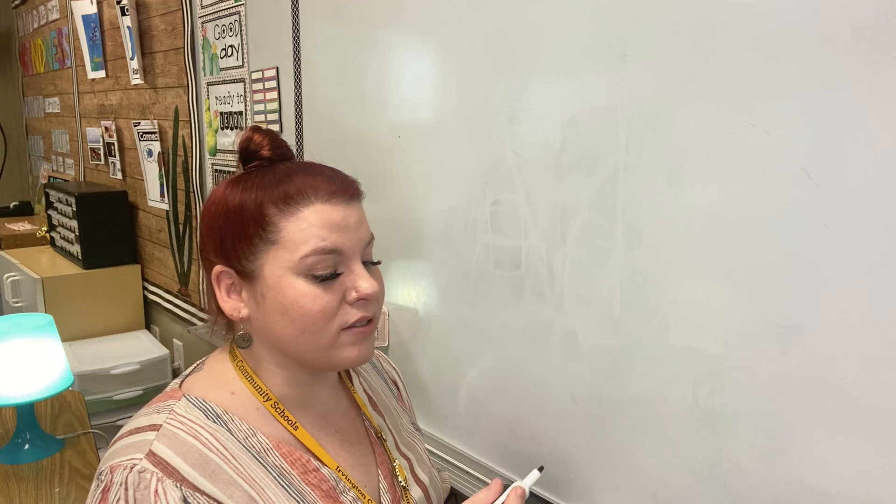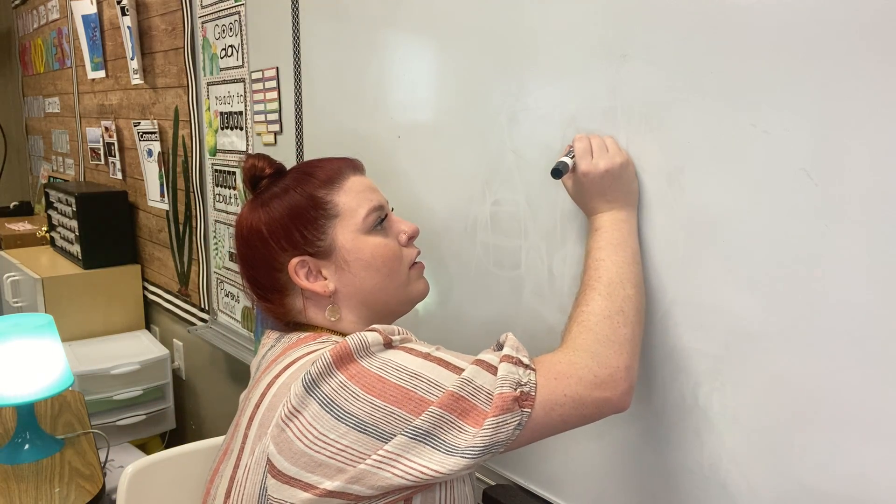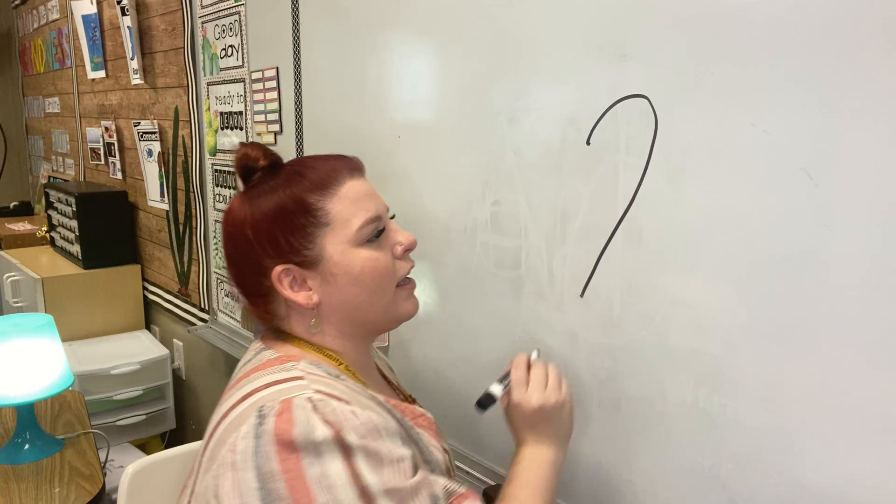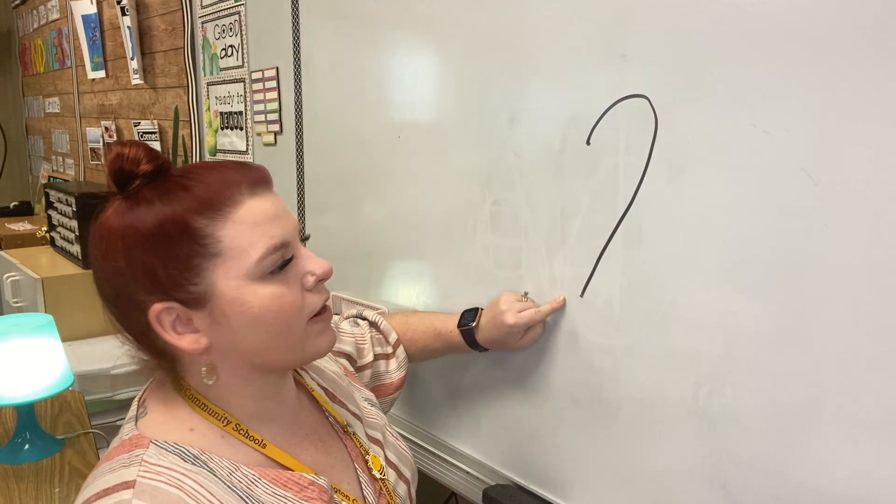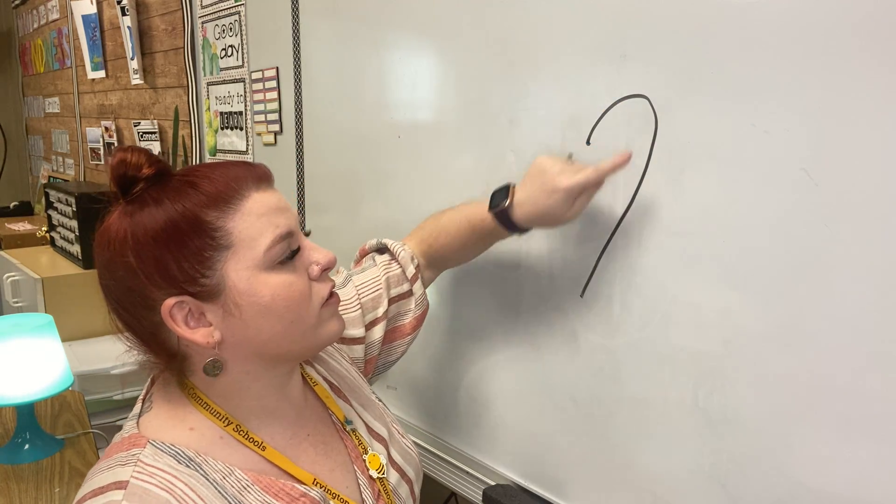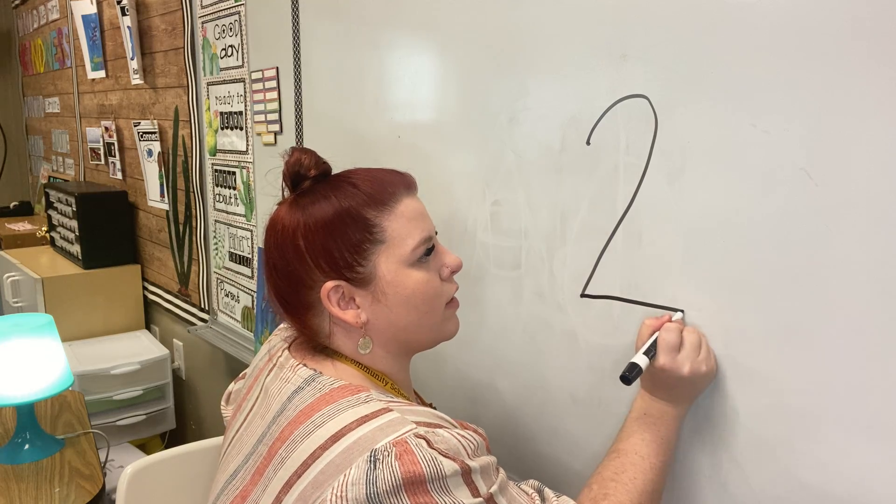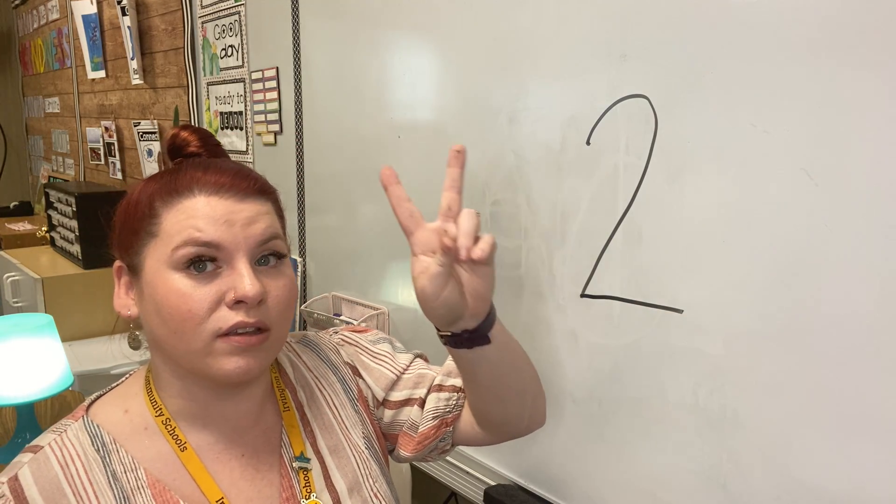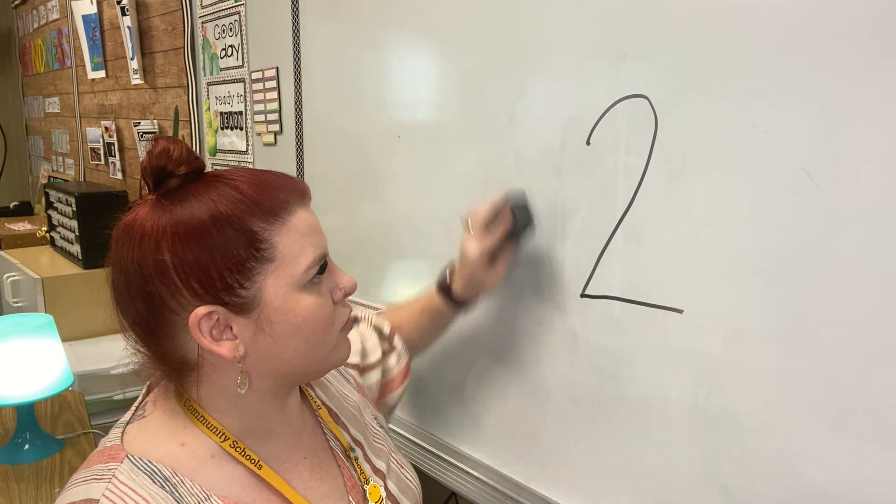Our next number is number 2. So we're going to start at a dot here and go down. It looks almost like half a heart, right? So we make our little loop and then go straight across. That is the number 2. Everybody show me two fingers. Good job.